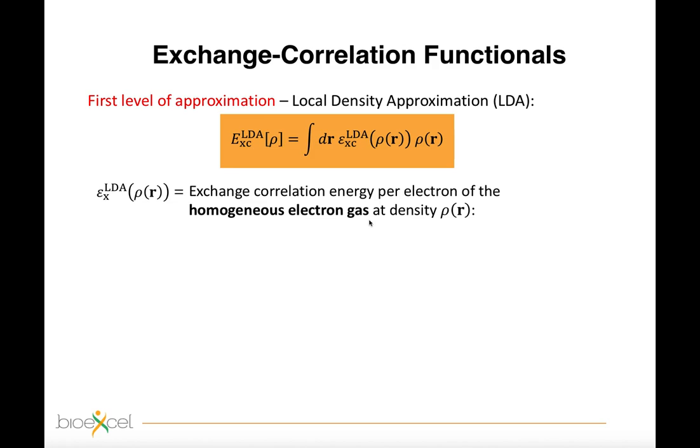The analytical form of the exchange term is easy to retrieve in this particular case, while the most common parametrization for the correlation part are obtained by interpolating the accurate values coming from quantum Monte Carlo simulations of the homogeneous electron gas at various densities.